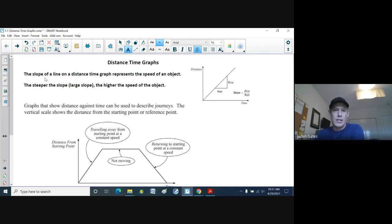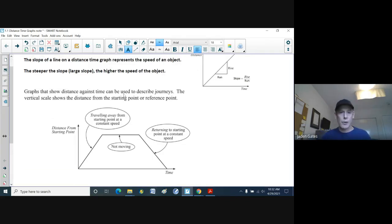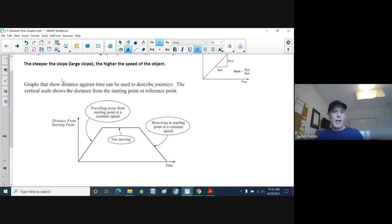So the slope of a line on a distance time graph represents the speed of an object. A little grade nine math, a little rise over run. And the steeper the slope, you have a large slope, that means you've got a higher speed. For instance, just an example here, if you can see at the beginning here in the blue part of my line going up,